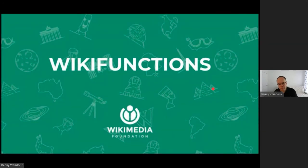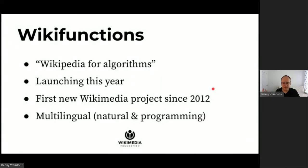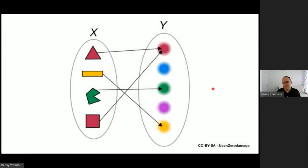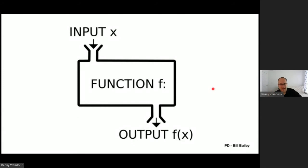Wikifunctions aims to be a comprehensive library of functions — Wikipedia for algorithms. We're launching later this year; it will be the first new Wikimedia project since Wikidata launched in 2012. It will be fully multilingual for both natural and programming languages. A function takes an input, runs a deterministic procedure, and returns an output. Functions are knowledge, and as such they are part of the Wikimedia mission. The big companies know that functions are knowledge — they allow you to access a growing number of functions through their services.